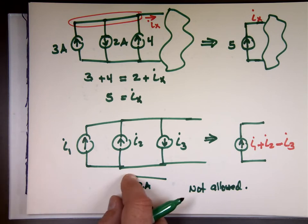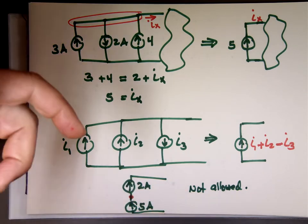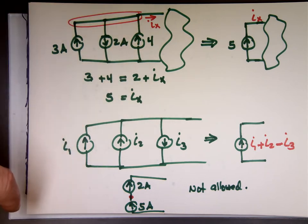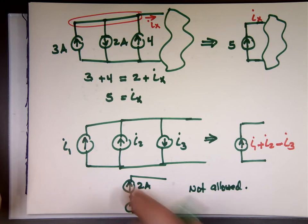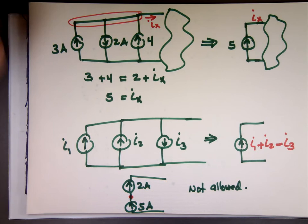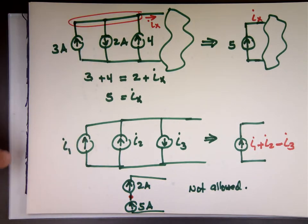So you can't connect current sources in series unless they have the same value. If both 2 amps and 2 amps, you're off the hook. But there's going to be at 2 amps. So why put two sources when you only need one? So if you put 2 amps in series with 2 amps, the result is still 2 amps. Why have two of them?